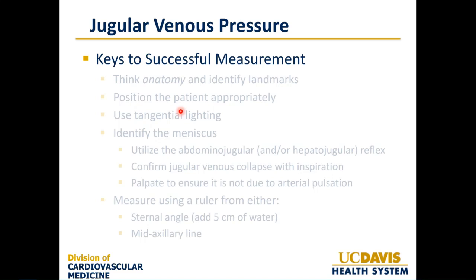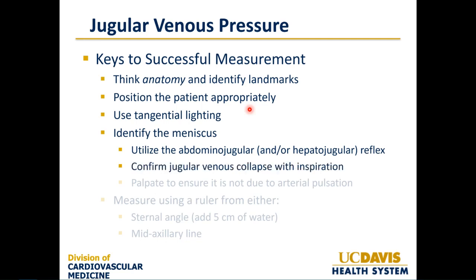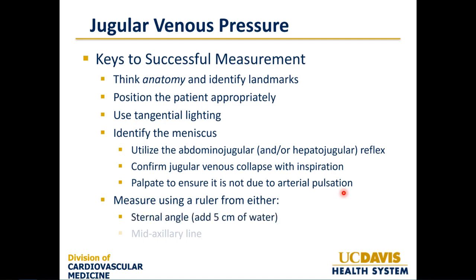To summarize the keys to a successful jugular venous pressure measurement: first, think about anatomy and identify landmarks. Position the patient appropriately and use tangential lighting to see the meniscus properly. Utilize the abdominal jugular and hepatojugular reflexes. Confirm jugular venous collapse with inspiration. Palpate to ensure it is not arterial — specifically carotid — pulsation. Then measure using a ruler from either the sternal angle, adding five centimeters of water, or the mid-axillary line for a more direct measurement.